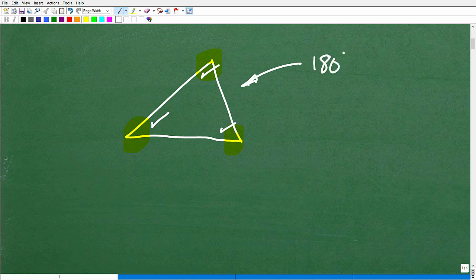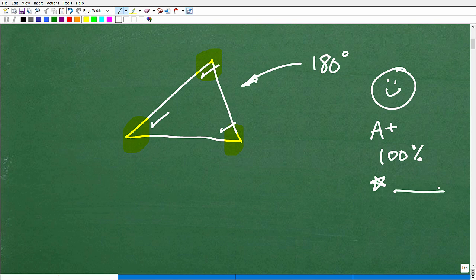Well, if you said 180 degrees, that is fantastic. Give yourself a happy face, an A plus, a 100%, and a one star. Not too many stars yet because we need to be able to solve this problem. But it's 180 degrees. The sum of the angles of a triangle is 180 degrees.